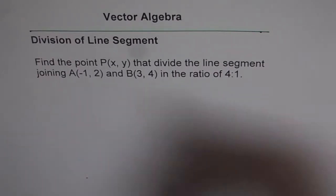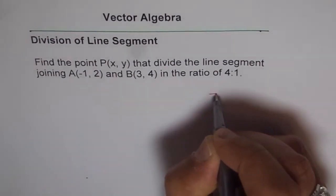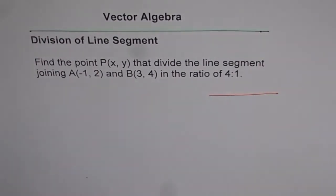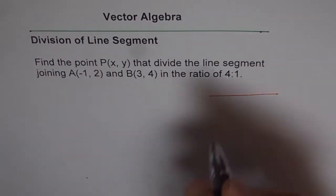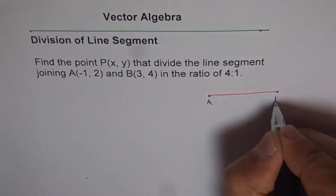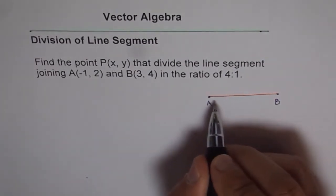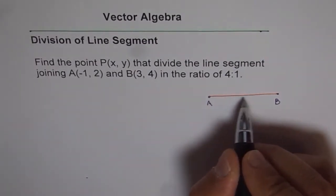So basically the question is that we have a line segment and let me draw a line segment like this from A to B. So this is the point A and that is the point B for us. We want to locate a point P so that it divides this in the ratio of 4 to 1.